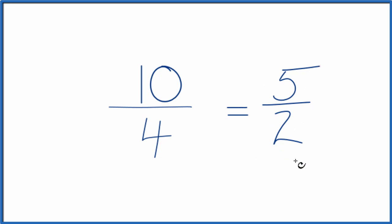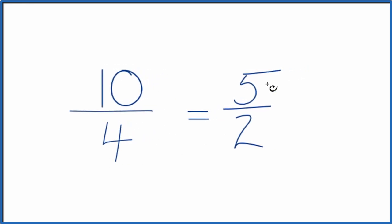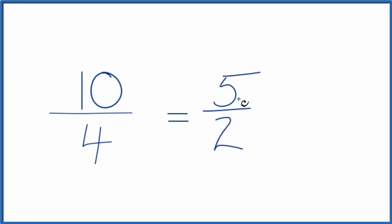This is considered an improper fraction, as is 10 fourths. That's because the numerator is larger than the denominator. So you could take 5 halves or 10 fourths and change that to a mixed number.